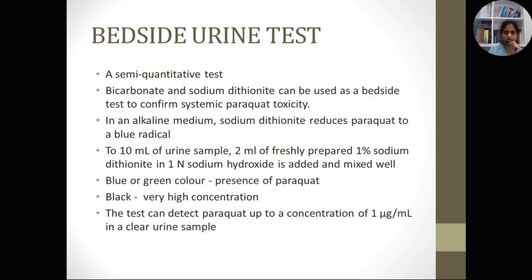The bedside urine test is a semi-quantitative test that helps for rapid detection and confirmation of paraquat poisoning. In this test, we mix 10 ml of urine sample with 2 ml of freshly prepared 1% sodium dithionate in 1N sodium hydroxide. If paraquat is present in the urine, it turns blue or green. If it is black, the concentration of the poison is very high. It can detect up to 1 microgram per ml of poison in the urine. The basic principle is that in an alkaline medium, sodium dithionate reduces paraquat to a blue radical.